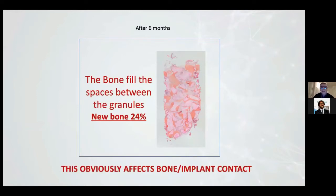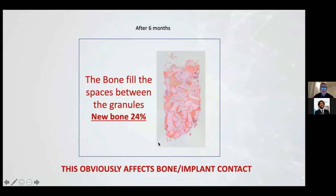In our test, in this histology image, it's possible to observe the granules in pink and in red the new bone. After six months, we found 24% of new bone. The other part of this histology is like stones. Obviously, if you place an implant in this bone, we have a bone-implant contact that is very thin — not like 100% of the surface.